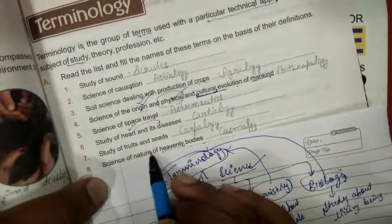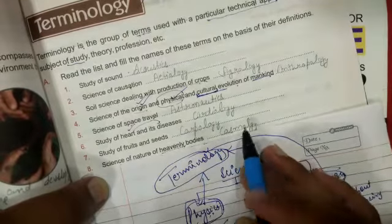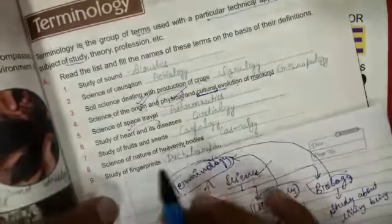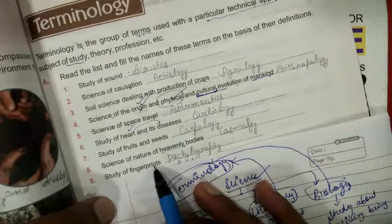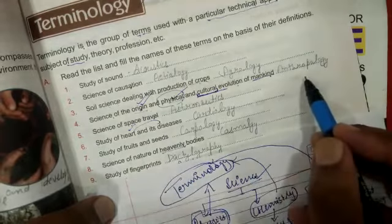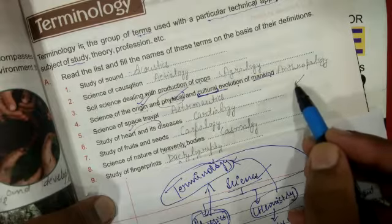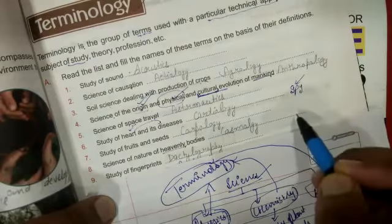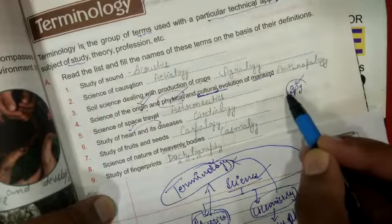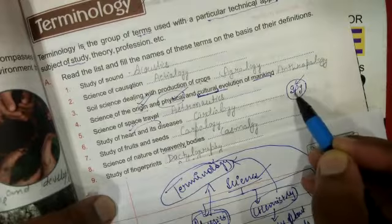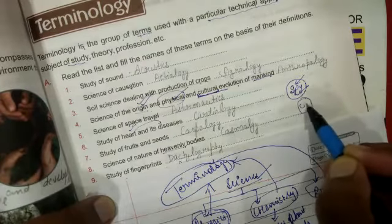The science which explains about their nature, what kind of bodies they are, that is called cosmology. Next one, study of fingerprints. At your age most of the students are very keen to have spy stories or to read spy stories, who go in different countries.